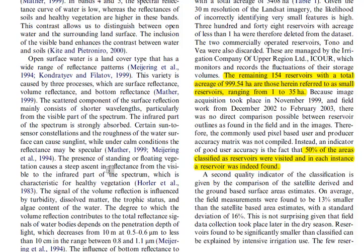The classification led to mapping 154 small reservoirs, defined here as reservoirs ranging from 1 to 35 hectares. Two much larger reservoirs in the region were excluded from the analysis. Going smaller than 1 hectare is impractical given Landsat's 30-meter resolution, as area estimates would become very inaccurate. Ground truthing took place a few years after image acquisition, but confidence remained high: nearly 50% of all mapped water areas were visited, and every single one was confirmed to be a reservoir — a score of 100%.